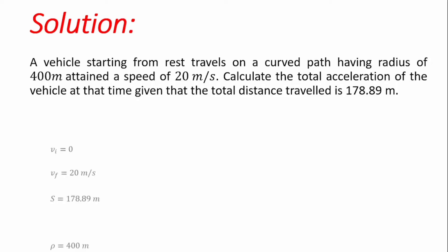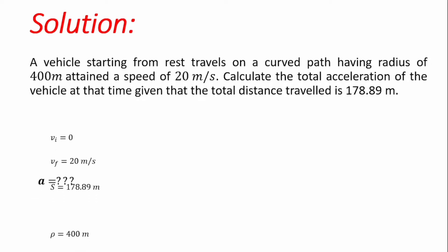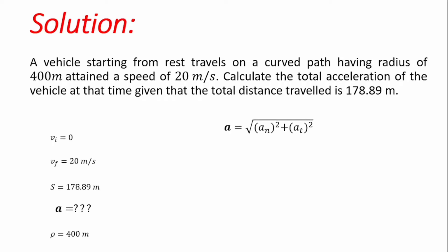To solve the problem we first list all identified variables and what we are asked to find, which is the total acceleration. We then call forth the relevant formulation. The total acceleration is the square root of the sum of the squares of its two components: the normal component, which is the acceleration that tends to drag the body toward the center of the curve, and the tangential component.